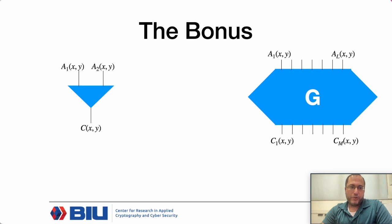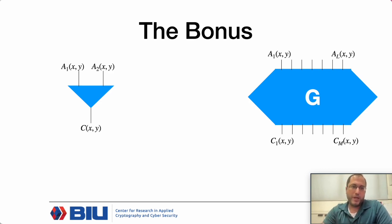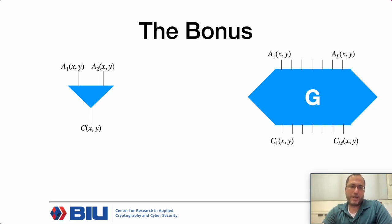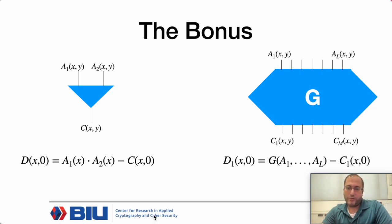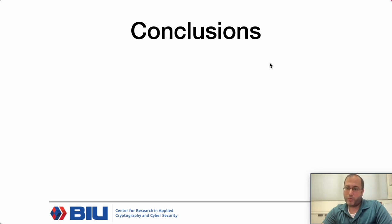What about the bonus? So far we looked at a single multiplication. We can also handle more complicated gadgets—any sub-circuit with multiplication depth 1, or any layer in the entire circuit. Each party computes the sub-circuit on all the input shares it holds, and then proves using one single VSS per output wire that the computation was correct.